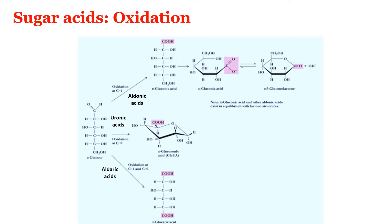When glucose is oxidized at C1, the first carbon — the carbonyl carbon — we will get aldonic acid. When it is oxidized at C6, we get uronic acid. And when both carbons, C1 as well as C6, are oxidized, we will get aldaric acid.